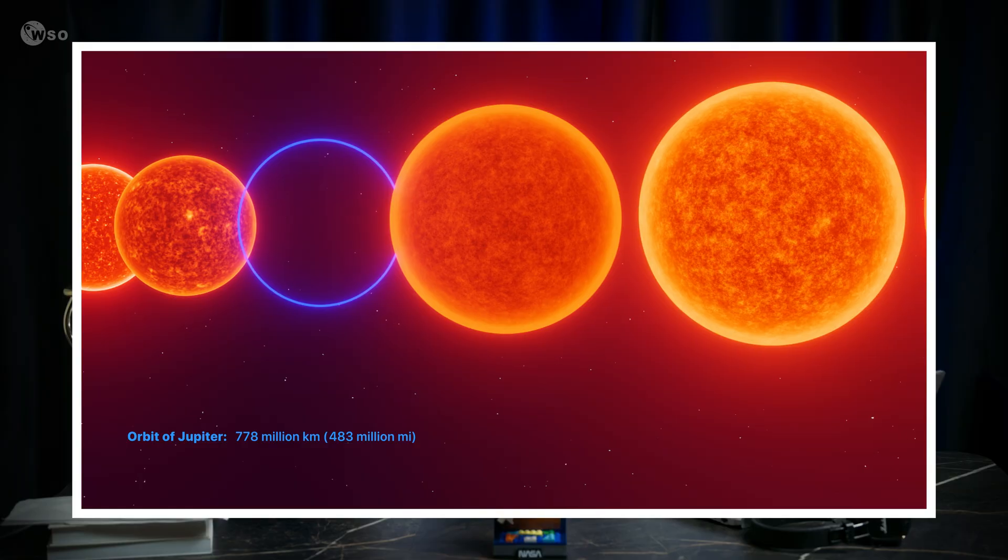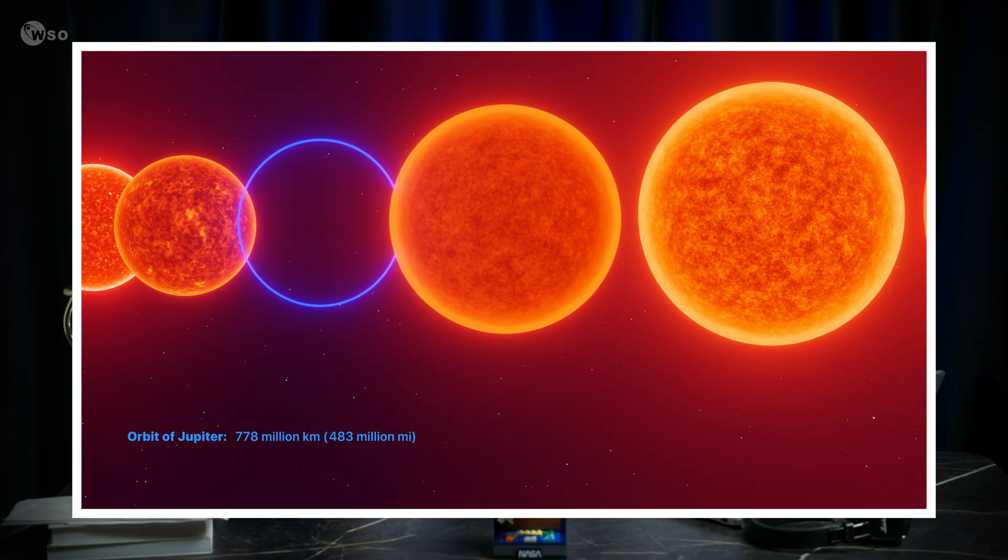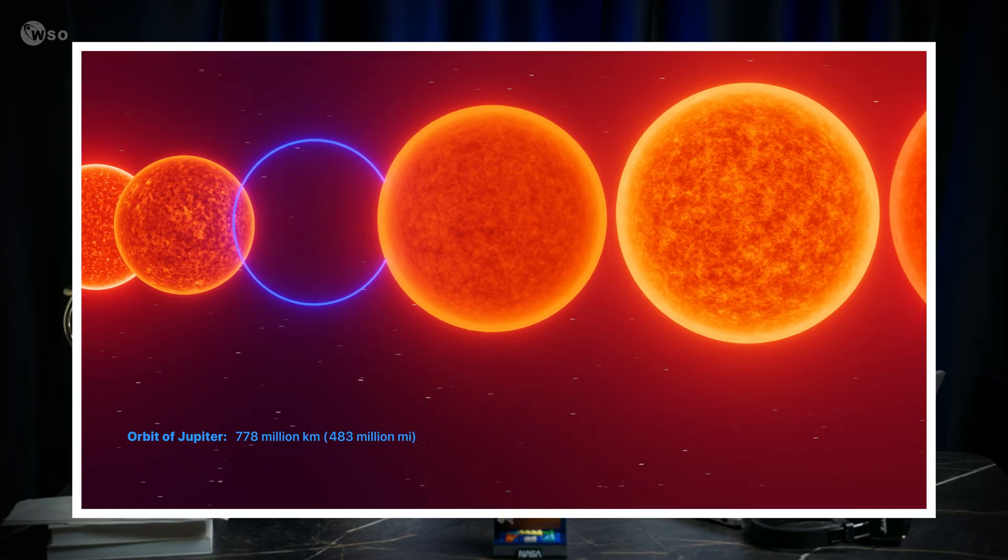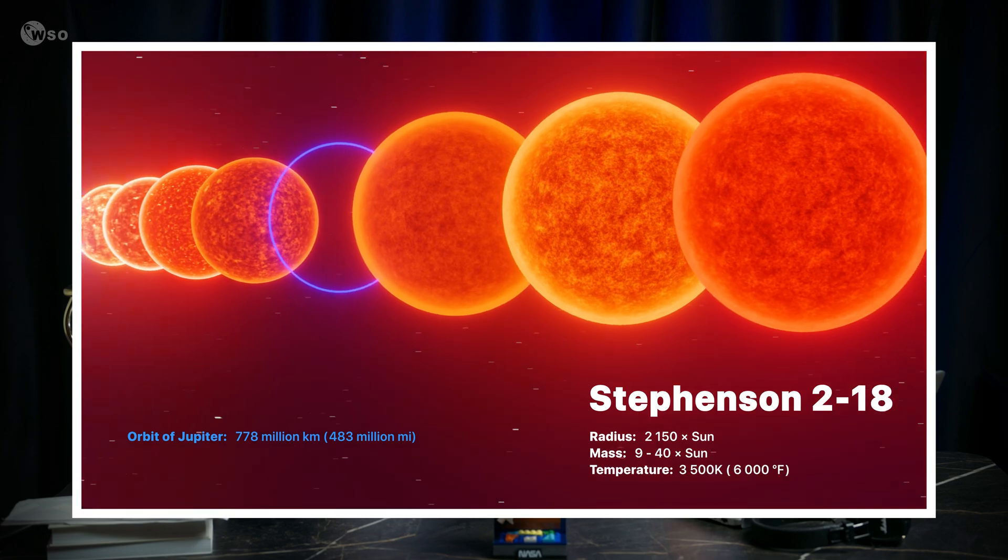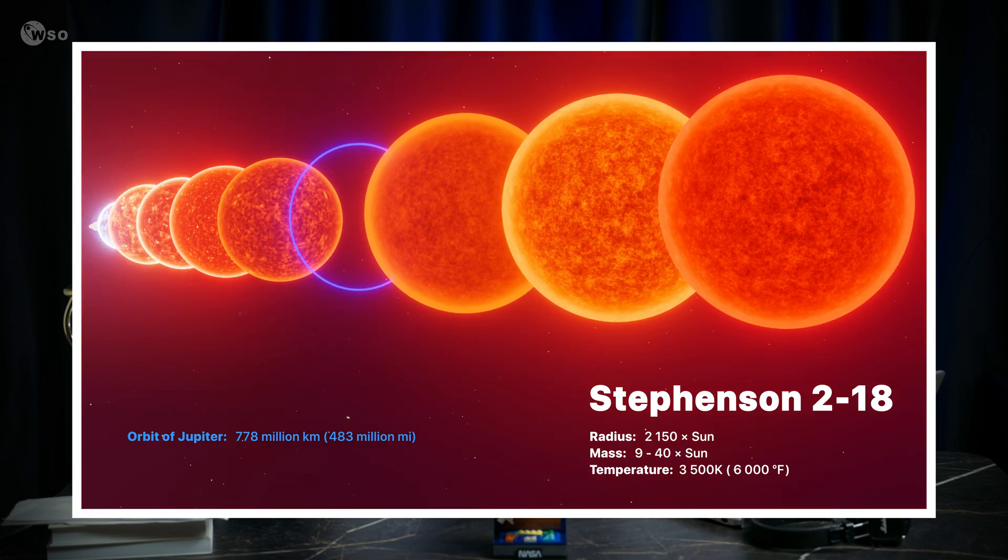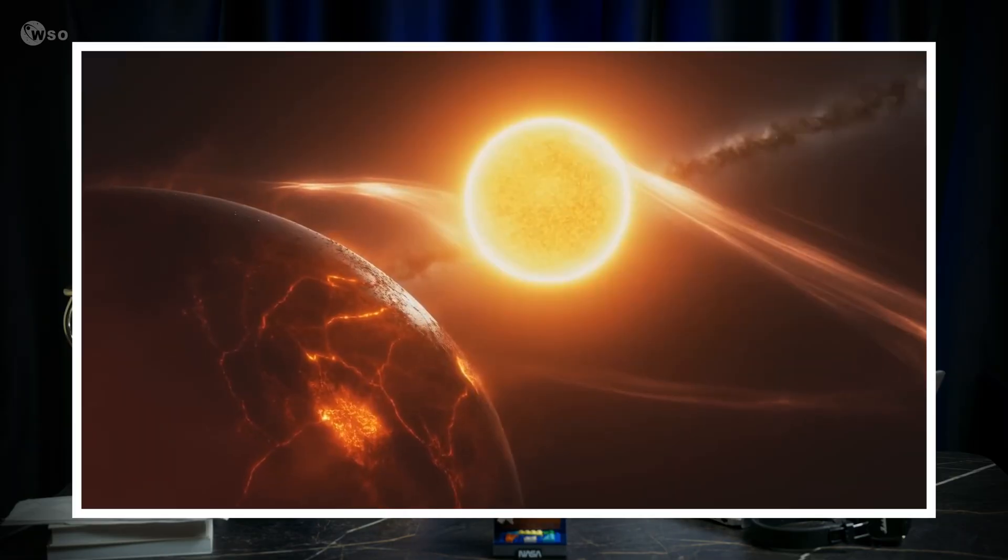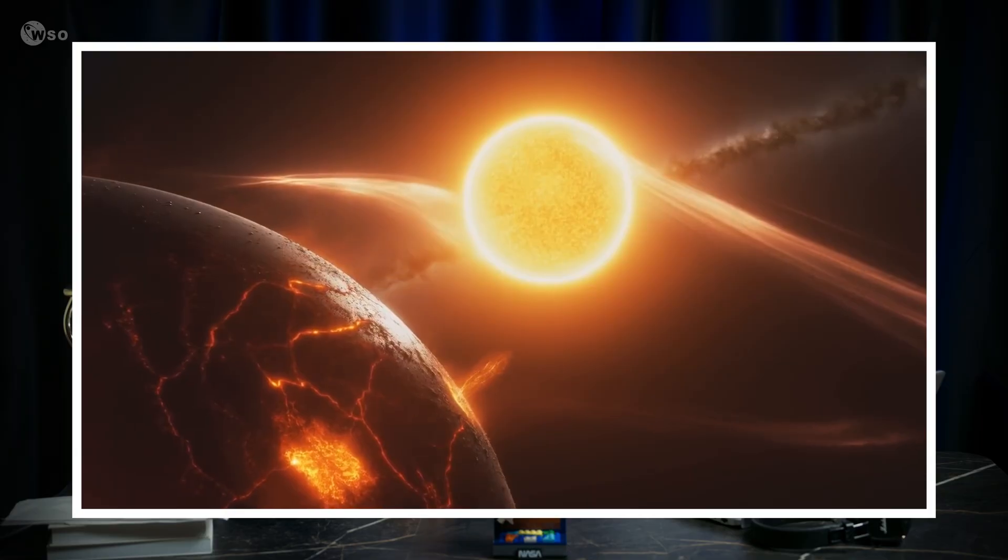This is where the trouble begins. Stephenson 2-18 is often quoted as 2,150 times the sun's radius, but that number only holds if its distance is what earlier studies assumed. And that radius is placed well beyond the size predicted by red supergiant models.